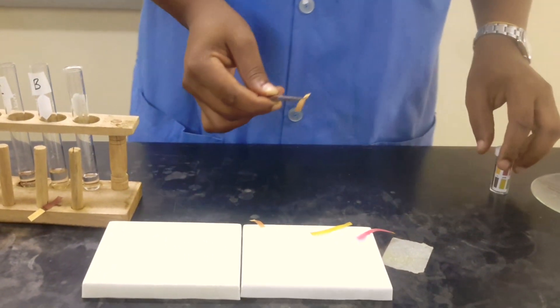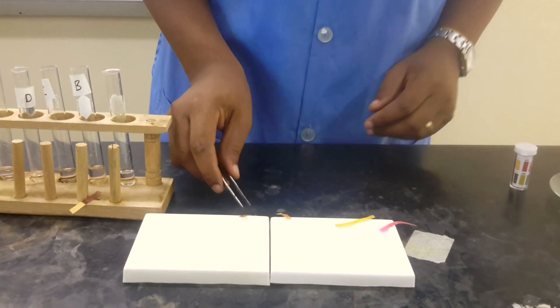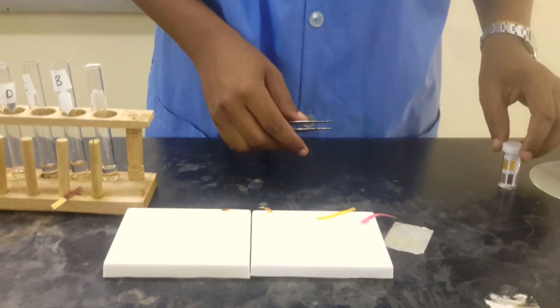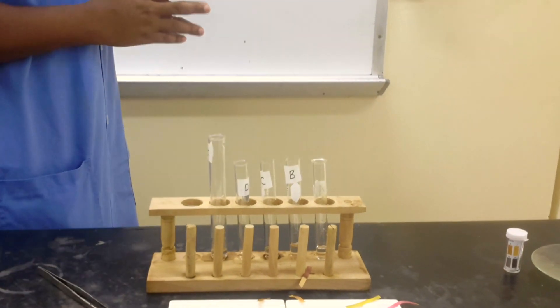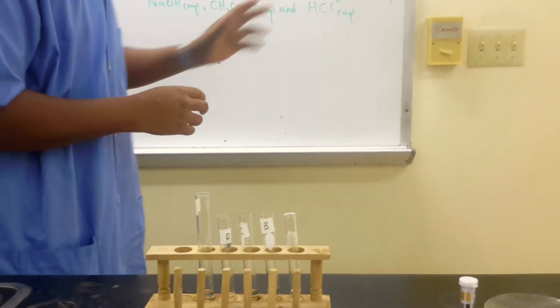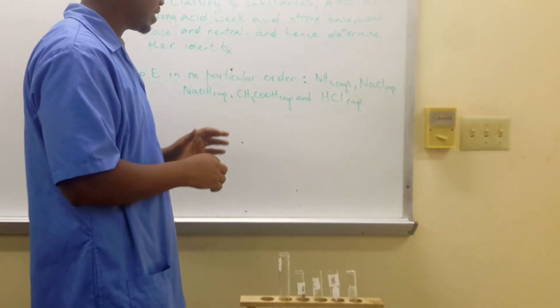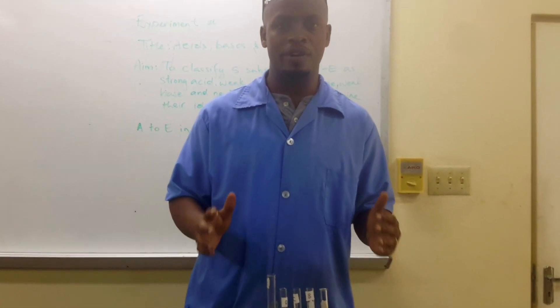So that is it. We've gotten our corresponding color changes and we matched the pH associated with those color changes. So we need to use all of that information to determine which is which. Whether A is ammonium, A is sodium chloride, A is sodium hydroxide, or whatever it is. So that's what we're going to do.